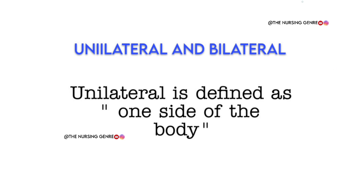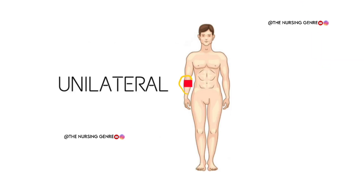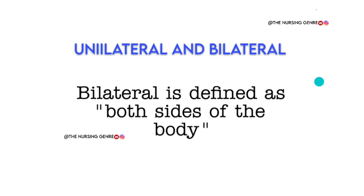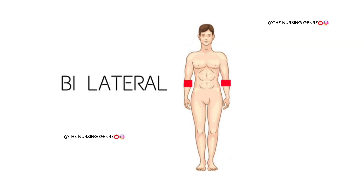Unilateral and bilateral. Unilateral is defined as one side of the body. In the picture, we choose only one side of the body — uni means one, lateral means side, so one side of the body is unilateral. Whereas bilateral — you can see both sides of the body. The red marks are on both sides, so that is bilateral.